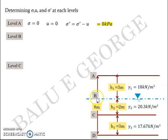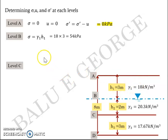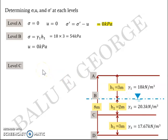At level B (water table level), total stress σ = γ₁ × H1 = 18 × 3 = 54 kPa. The pore water pressure u = 0, because the water table just starts at that level. Therefore, effective stress σ' = σ − u = 54 kPa.